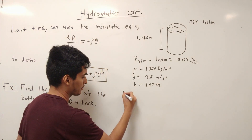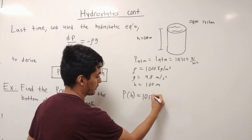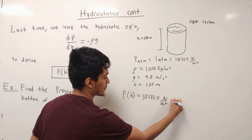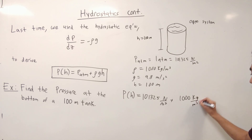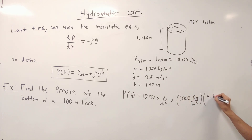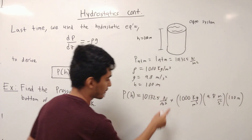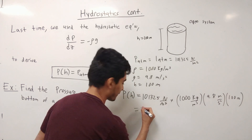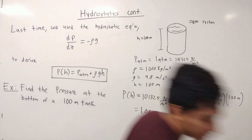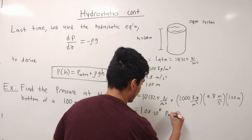So we can plug into this equation: P as a function of height is going to be 101,325 Newtons per meter squared, plus density — 1,000 kilograms per meter cubed — times 9.8 meters per second squared, times 100 meters. If you cancel out these units, they will be the same, and you're going to get an answer of 1.08 times 10 to the 6 Pascals, or Newtons per meter squared.